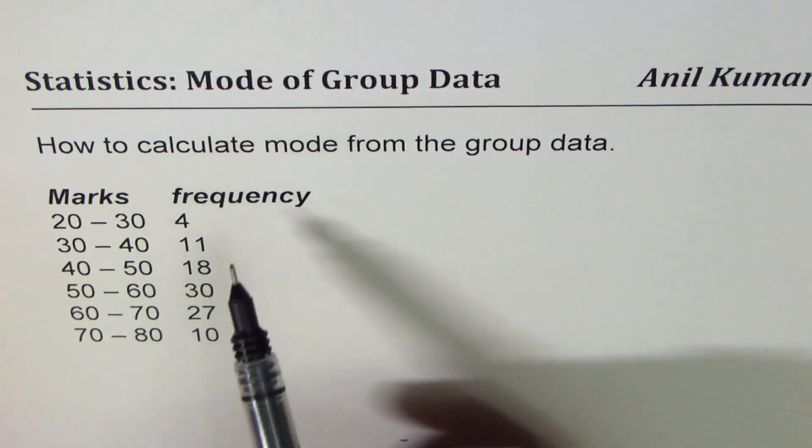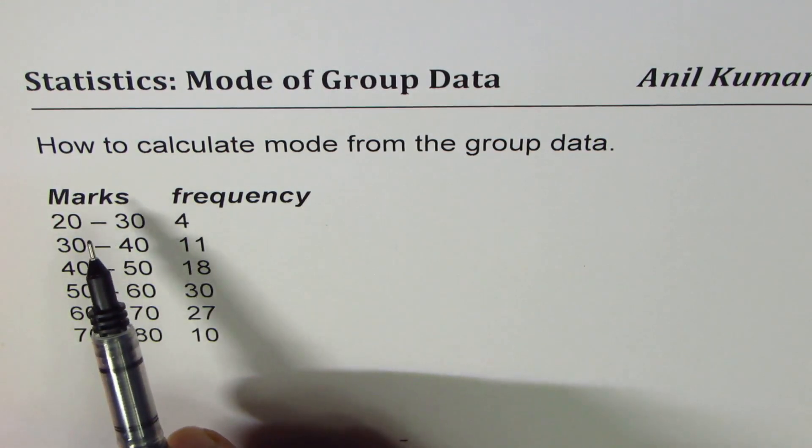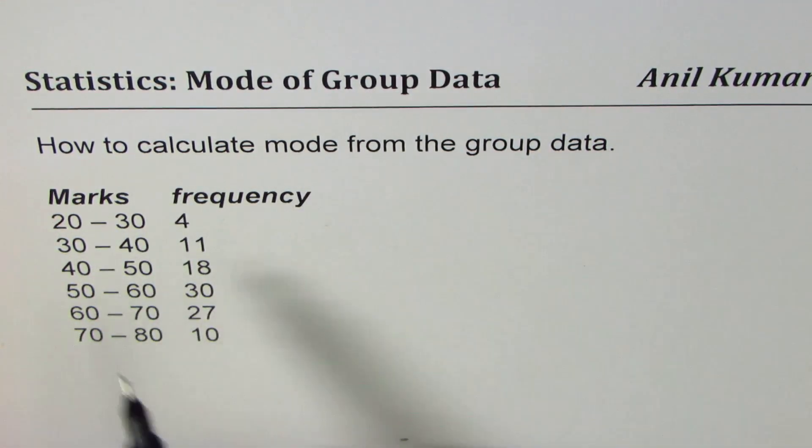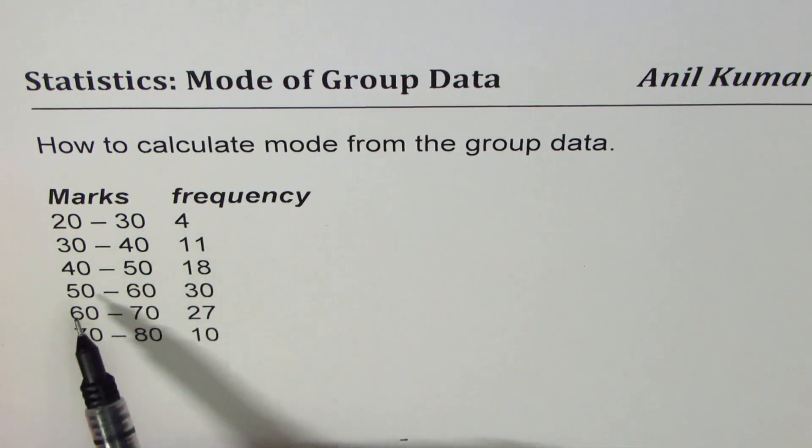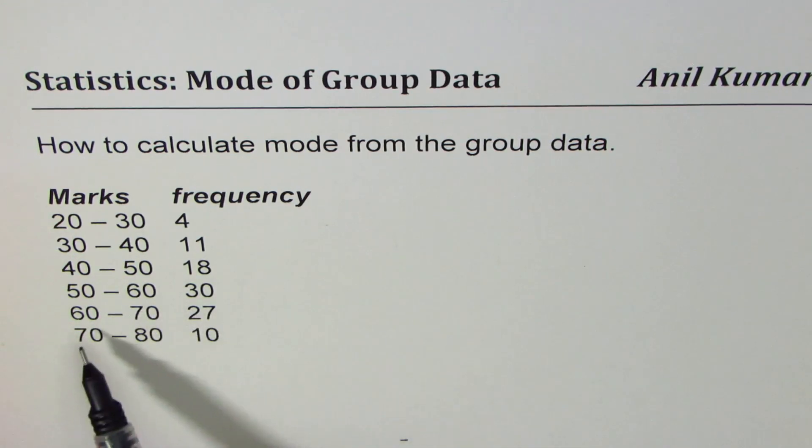The question is how to calculate mode from the grouped data. We are given marks of students in a class: 20 to 30 there are 4 students, 30 to 40 has 11, 40 to 50 has 18, 50 to 60 has 30, 60 to 70 has 27, and 70 to 80 has 10 students.